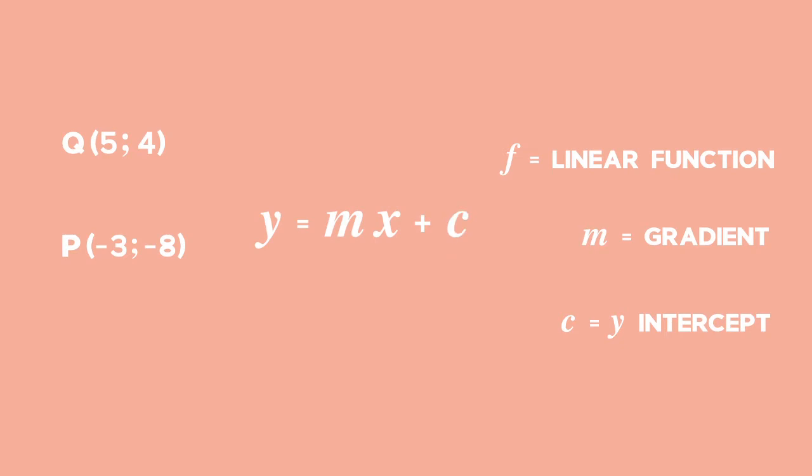In order to determine the gradient, we use the formula m equals y2 minus y1 over x2 minus x1.